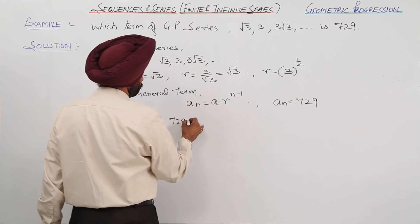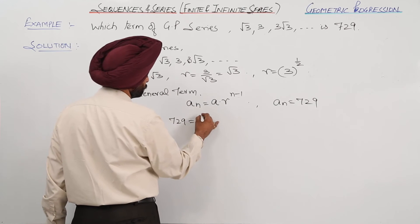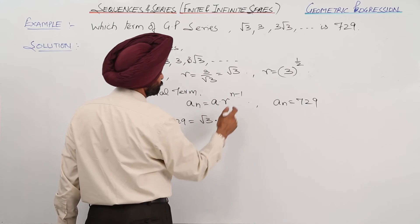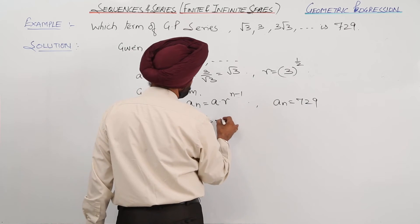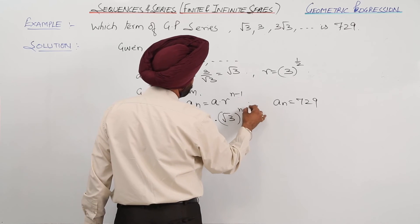729 equals a. The first term is what? Root 3 with r. R is what? r is root 3 raised to power n minus 1.